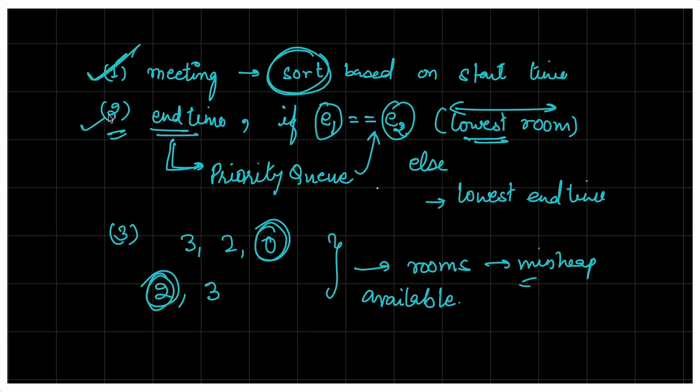To summarize the three observations: one, sort meetings based on start time. Two, create a priority queue for occupied meetings — if two meetings have the same end time, lowest room number at the top; otherwise lowest end time at top. Three, create a min heap for available rooms so the lowest room number is always at the top.